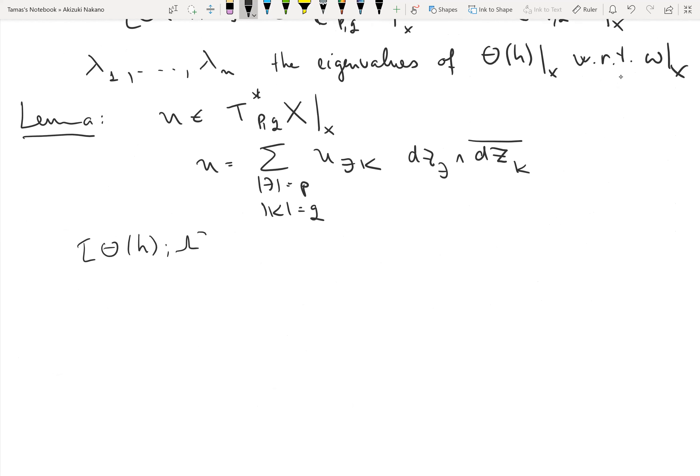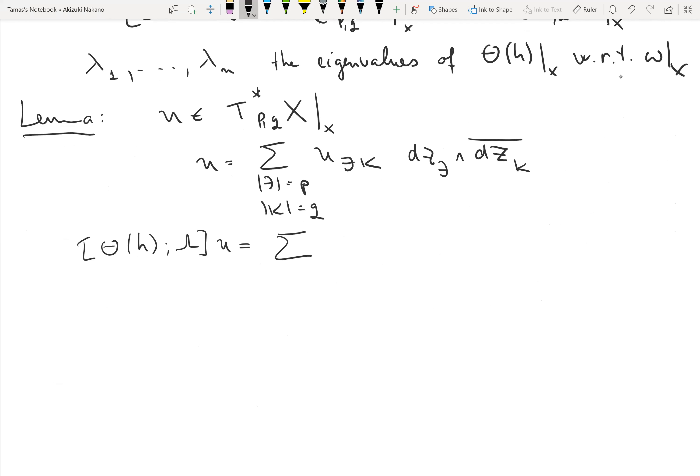The content of the lemma is as follows: theta_h lambda u is the sum over J,K of u_{J,K}, and then here's what's important—it will be sum of lambda_j where j is from J, plus sum of lambda_k where k is from K, minus sum of lambda_m where m is between 1 and n.